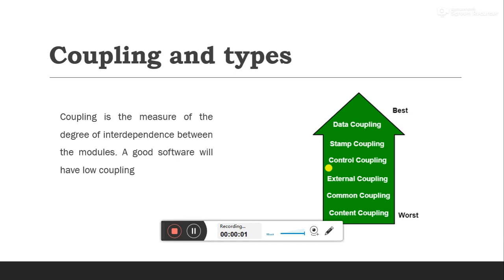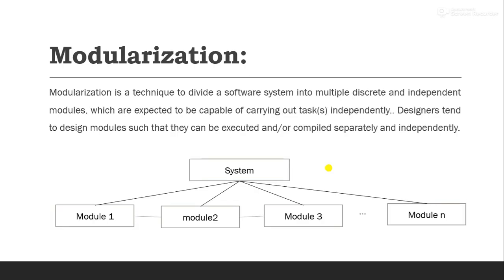Hello dear students. Today we are going to start the basic but most important concept of software design — coupling and cohesion. Before starting, I would like to revise what we studied in our previous classes. We studied the concept of modularization, which is a technique of dividing the entire software system into a number of multiple modules, capable of performing their own tasks without taking help, or by taking minimum help, from other modules.